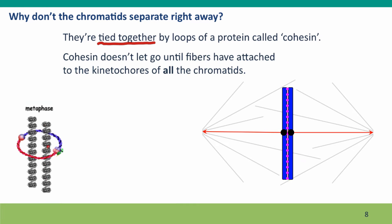Cohesin doesn't let go until it gets a signal telling it that all of the kinetochores have spindle fibers attached to them. You might remember in the video in the previous lecture, there was one cell that got stuck in mitosis and stayed with its chromosomes at the center of the cell — the place called the metaphase plate. It stayed there for as long as we watched because that cell hadn't received the okay to pass through the checkpoint. The cell has a checkpoint to make sure everything's set up properly, and that checkpoint doesn't let cohesin come undone until all the chromosomes are properly attached to the spindle fibers.